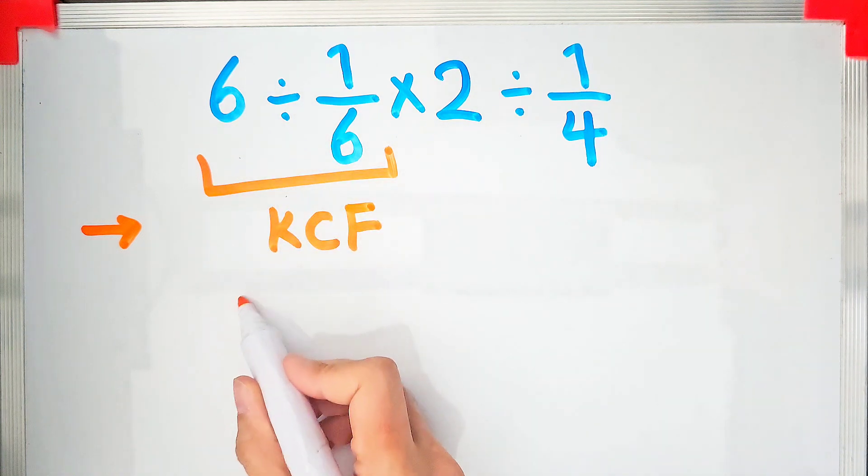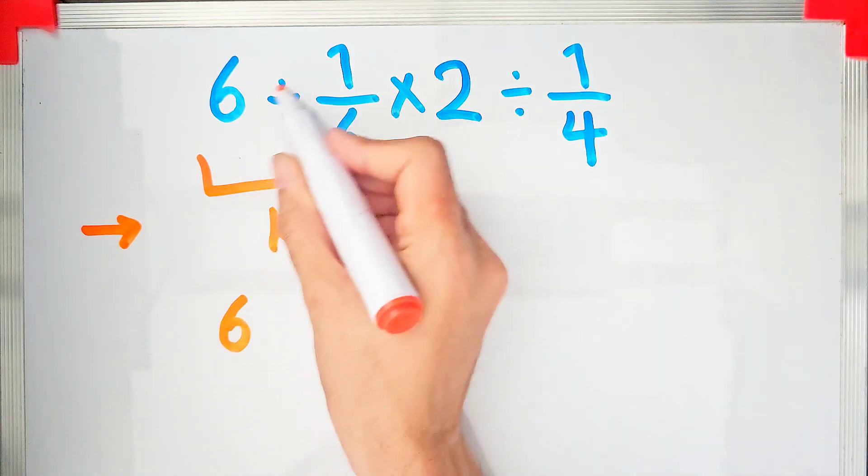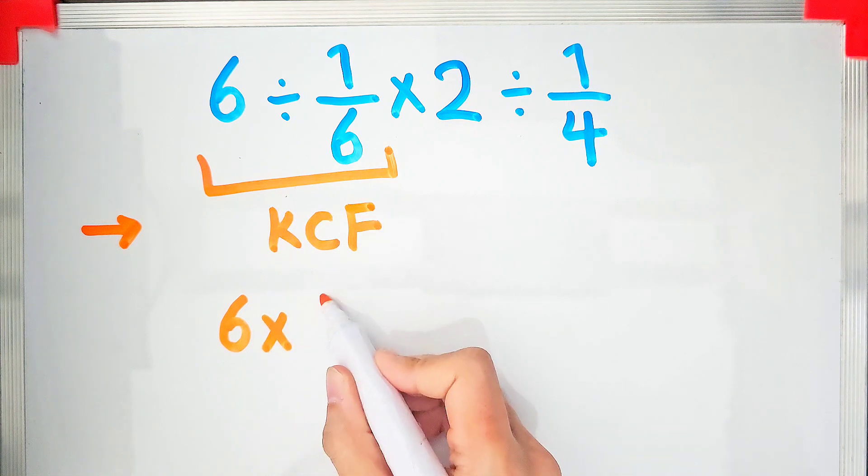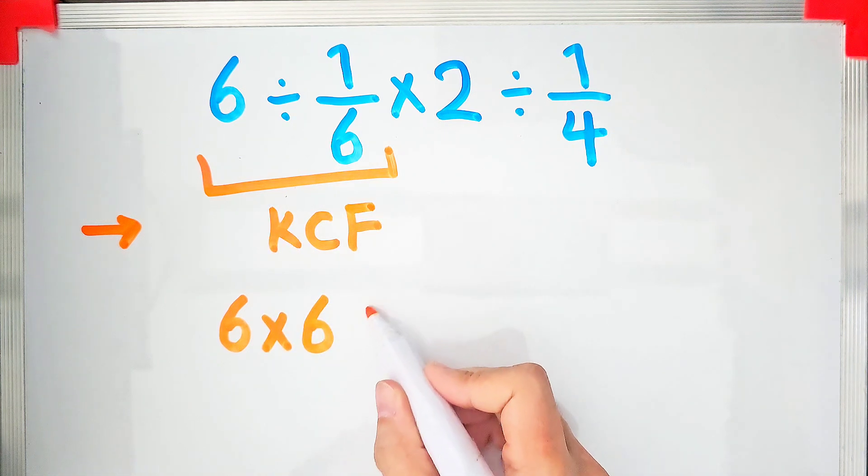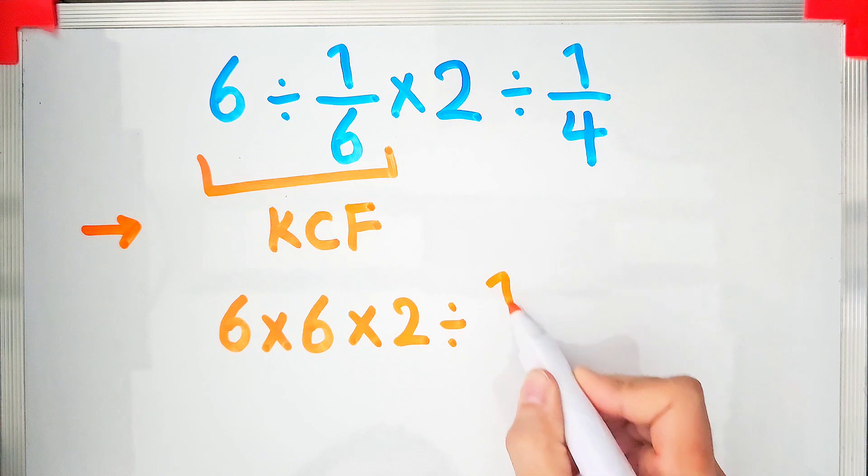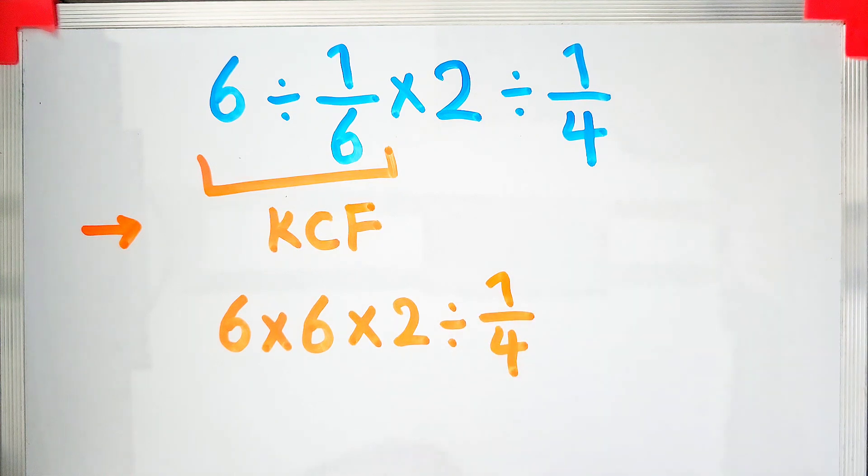We keep the first number as it is, then change the sign, then flip the second fraction. Now simplify the question and we have a new expression. Again we start from the left.